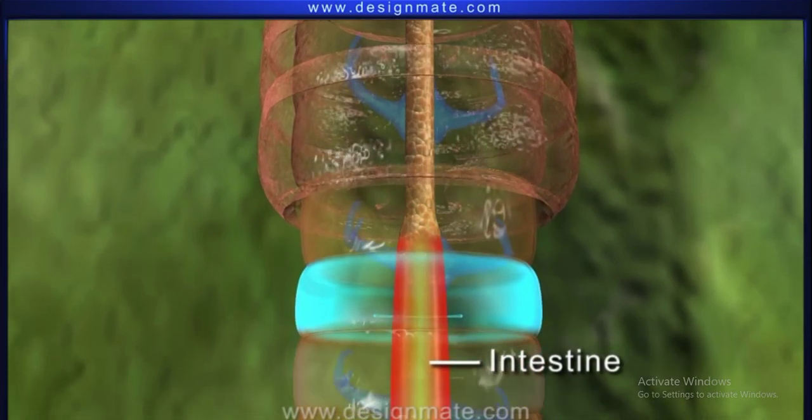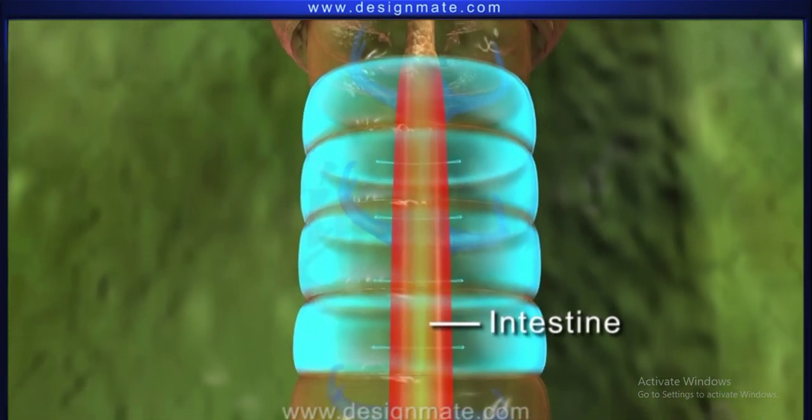The intestine starts from the 15th segment as a wide, straight tube and continues downward.